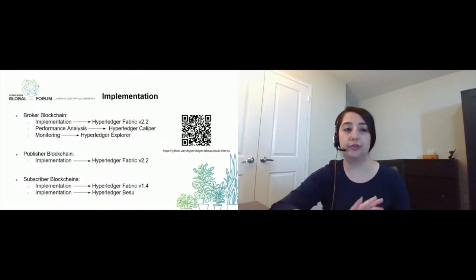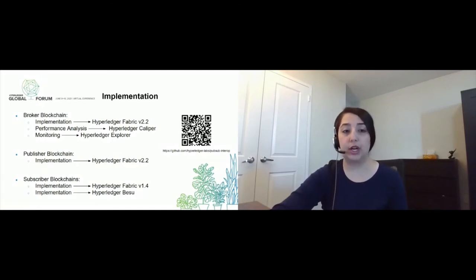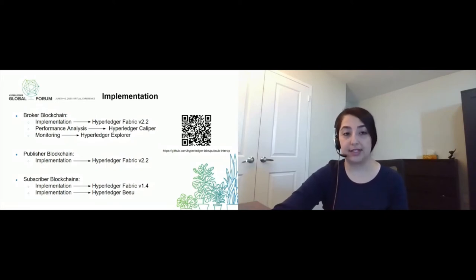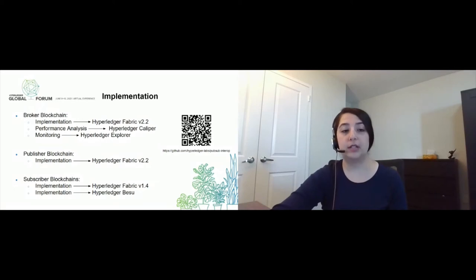We implemented a proof of concept for our design to make sure that it's feasible and makes sense. All of our code is on the Hyperledger Labs GitHub page — you can scan the QR code on this page to go to that link. We implemented the broker blockchain using Hyperledger Fabric version 2.2. We used Hyperledger Caliper to analyze the performance and Hyperledger Explorer to monitor the network. For the publisher and subscribers, we implemented these in different technologies and different versions of Fabric, to show that this could eventually be used with other permissioned blockchains as well — one publisher using Fabric 2.2, two subscribers using Fabric 1.4 and another in Hyperledger Besu.